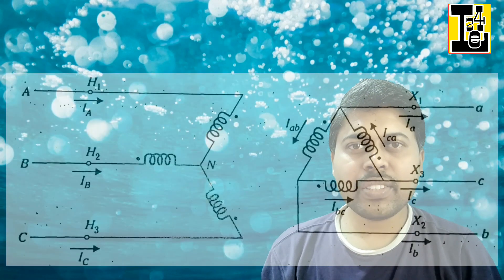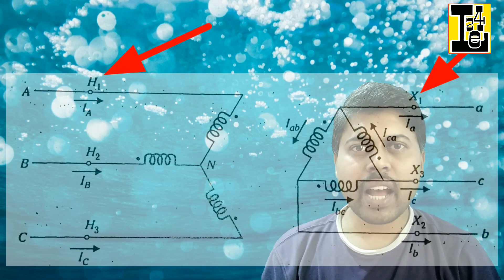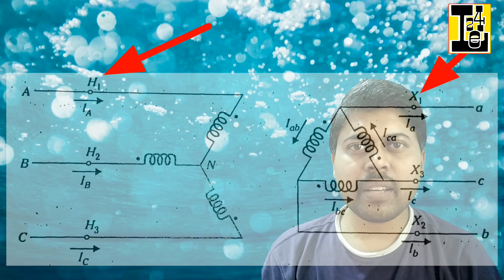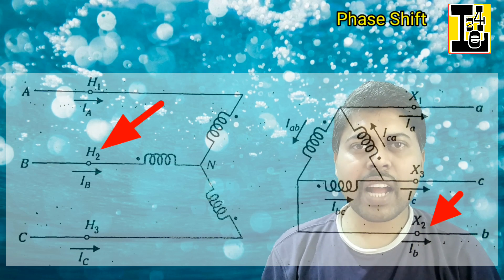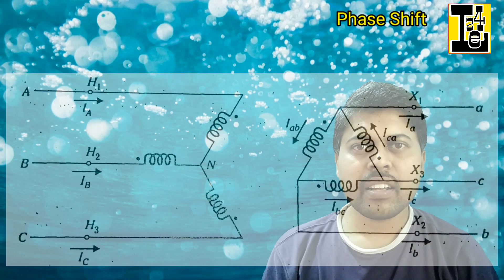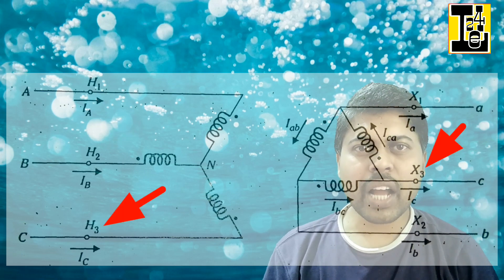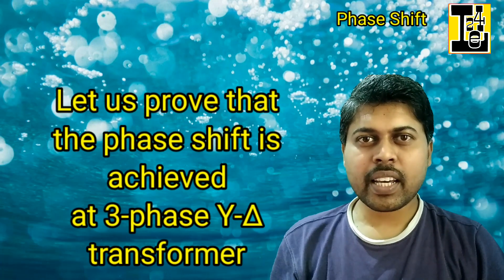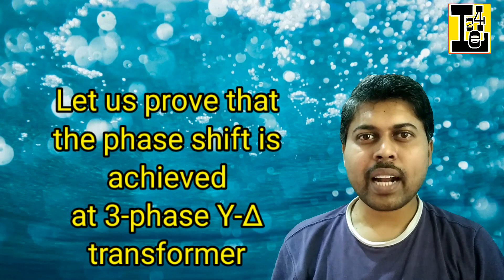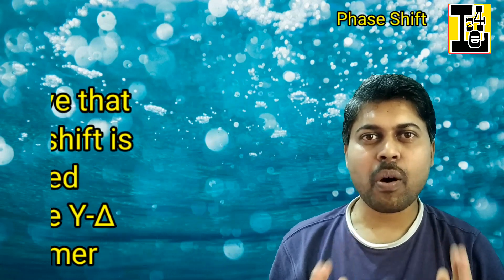According to the ANSI standards for designating the terminals, the voltage at H1 will lead the voltage at X1 by 30 degrees. Similarly, the voltage at H2 will lead the voltage at X2 by 30 degrees, and the voltage at H3 will lead the voltage at X3 by 30 degrees. Let us go through the phasor diagrams which will prove that the phase shift is achieved in a star-delta transformer.